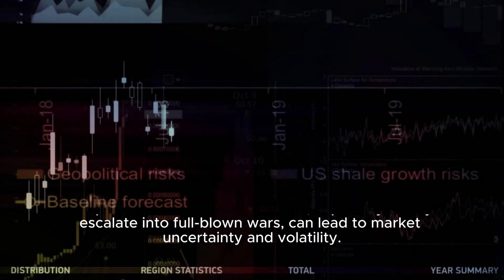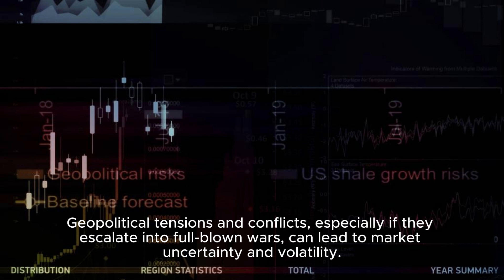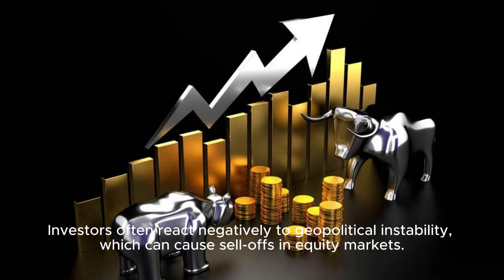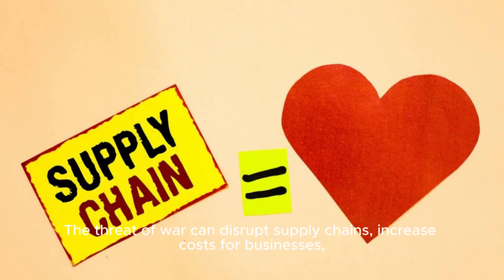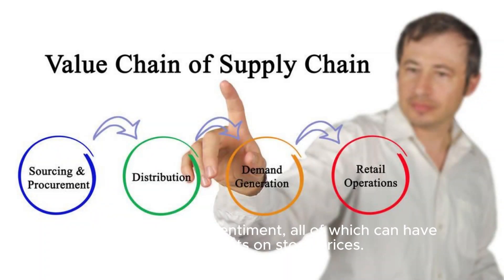War. Geopolitical tensions and conflicts, especially if they escalate into full-blown wars, can lead to market uncertainty and volatility. Investors often react negatively to geopolitical instability, which can cause sell-offs in equity markets. The threat of war can disrupt supply chains, increase costs for businesses, and affect consumer sentiment, all of which can have adverse effects on stock prices.